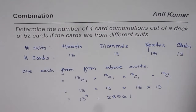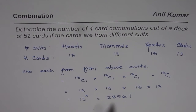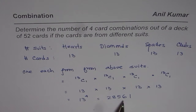So the number of ways in which you can have four-card combinations out of a deck of 52 cards where each card is from a different suit is 28,561. Thank you.